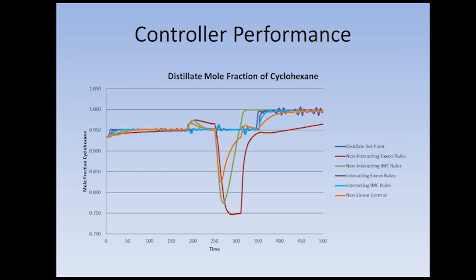As a result, we have these results which show how well all the different controls follow the set points. This dark blue line right here that's kind of hidden is the set point. You can see that the non-interacting controllers and the non-linear controllers did not do very well in following the set point. At these little blips right here is where the feed was changed. We can see that the interacting IMC control and the non-interacting Exxon controls did very well at following the set point.